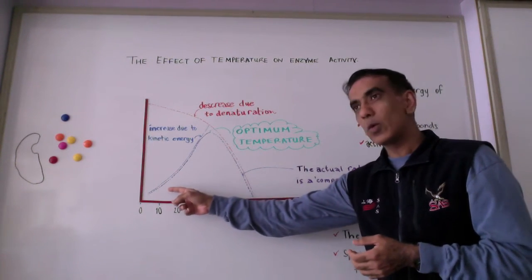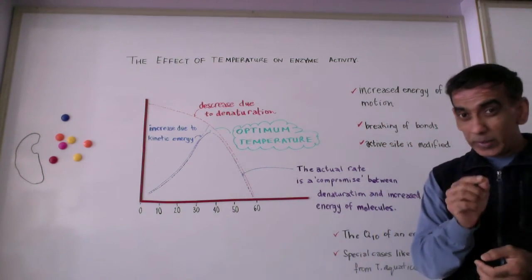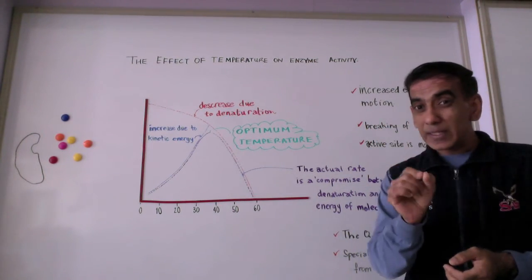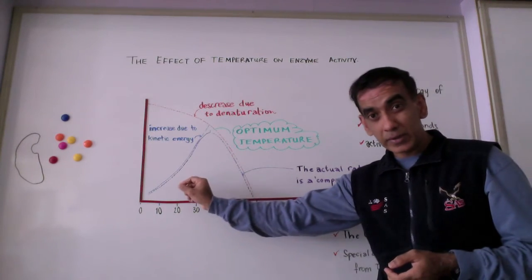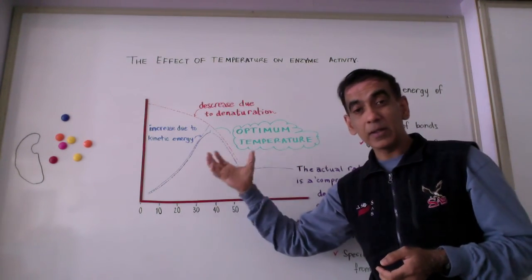And similarly, we can hypothesize that organisms that live in very cold temperatures would have enzymes that have an even different set of dynamics.